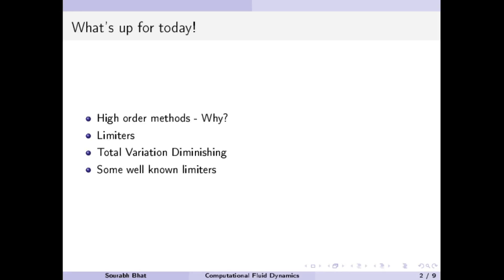We will be using limiters and trying to overcome the limitations of higher order methods. Then we will be looking at total variation diminishing and their relation with limiters, and finally looking at some of the well-known limiters from literature.